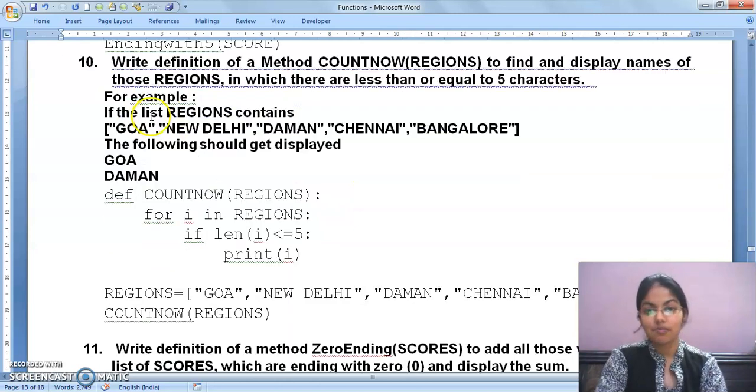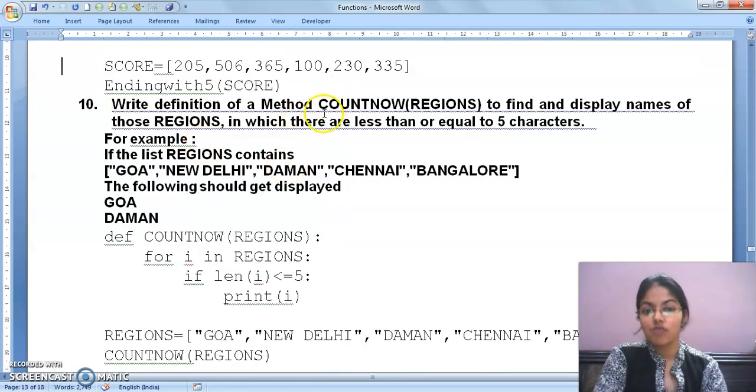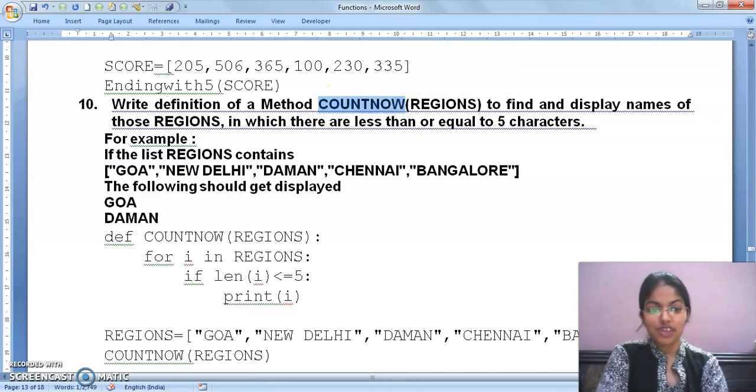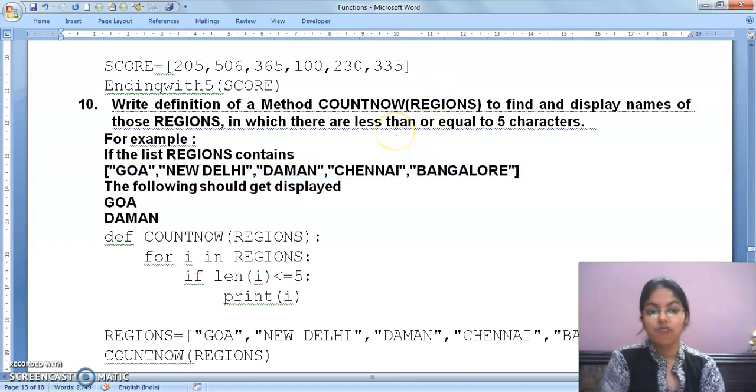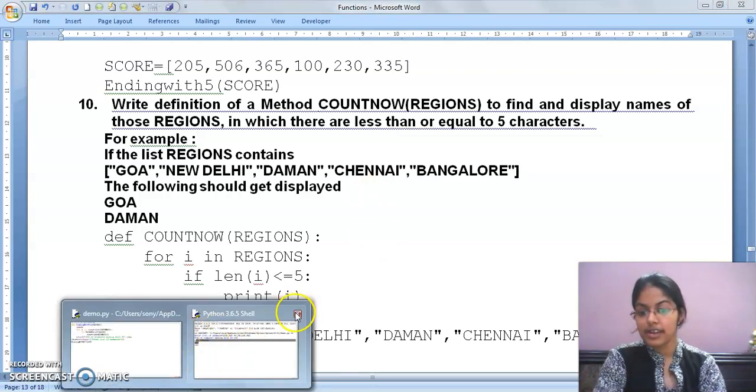So let's start with next question. Write the definition of a method count_now. The name of function is count_now and the name of list is regions, to find and display names of those regions in which there are less than or equal to 5 characters. You have to display those names only in which there are less than or equal to 5 characters. Question clear? Okay, now I am opening the Python IDLE.